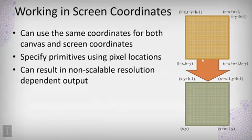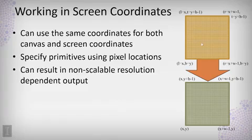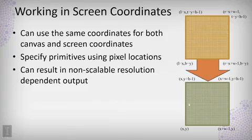I don't recommend working in screen coordinates, because you won't know what your output display device might be — it could be a cell phone, a television, a watch, or a video wall — and all of those have different resolutions. It's better to work in canvas coordinates that are convenient for you and let the canvas-to-screen transformation handle converting to the corresponding pixels.